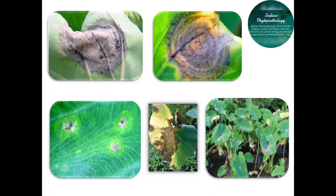Similarly, we have to drench the crop with fungicide — Bordeaux mixture 1.2%, or captan, or copper oxychloride, or metalaxyl. These are some recommended fungicides. This fungicide should be used for drenching so that oospores present inside the soil get killed. Any mycelial structures also present in the soil, which serve as a primary source of infection, will also be killed by this fungicidal action.